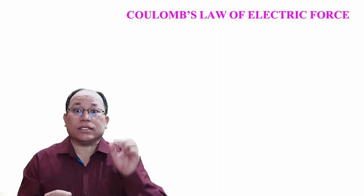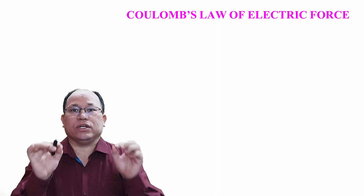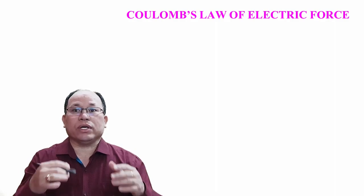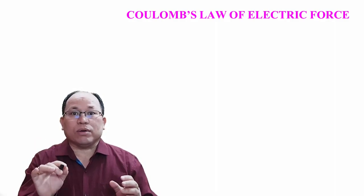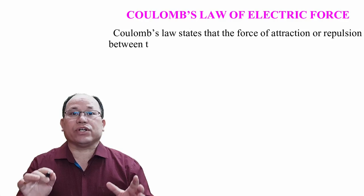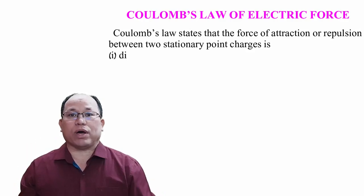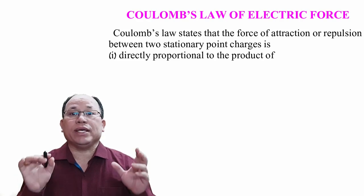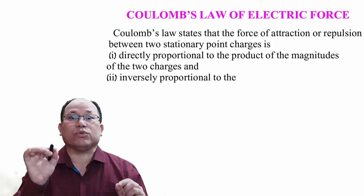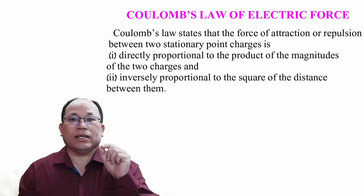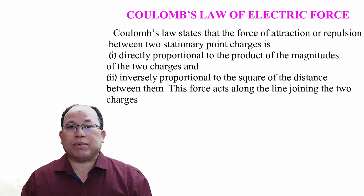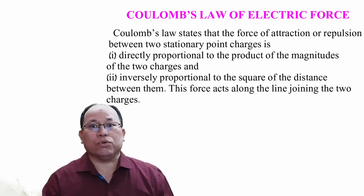The second condition is that the two point charges should be at rest — it will not be applicable to motion. Coulomb's Law states that the force of attraction or repulsion between two stationary point charges is: first, directly proportional to the product of the magnitude of the two charges, and second, inversely proportional to the square of the distance between them. This force acts along the line joining the two charges.